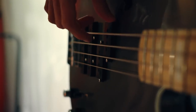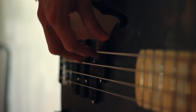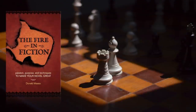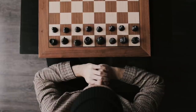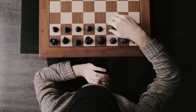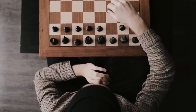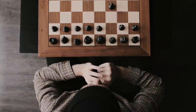This decision point generates microtension within the larger win-or-lose scenario. As writing guru Donald Maass explains, microtension is the moment-by-moment tension that keeps the reader in a constant state of suspense over what will happen — not in the story, but in the next few seconds. Tevis ensures that every sentence produces uncertainty about what Beth will ultimately decide.